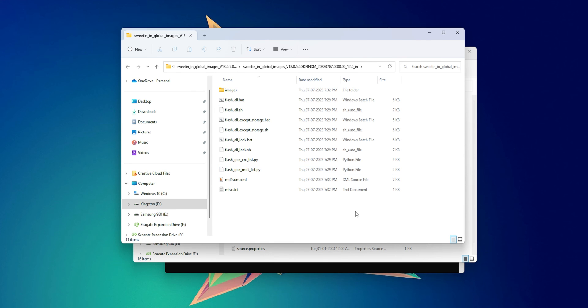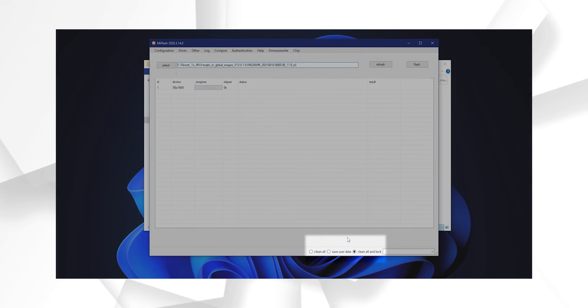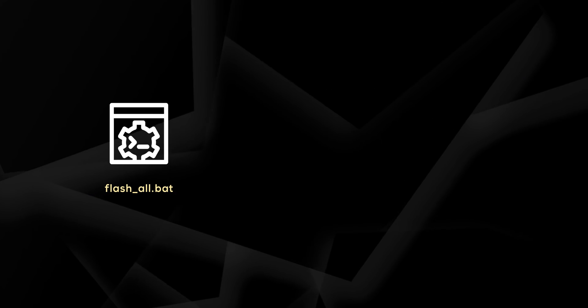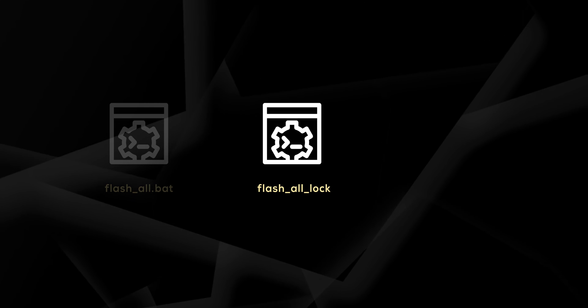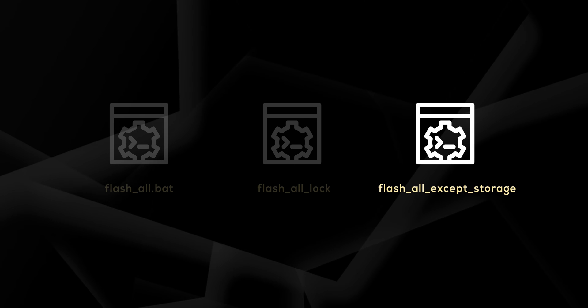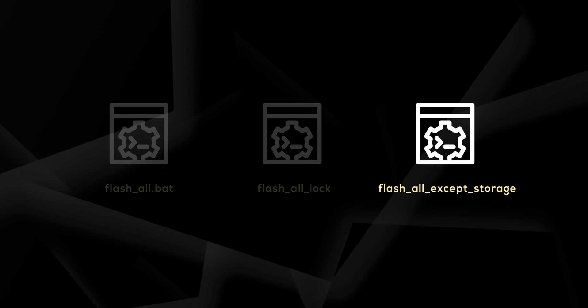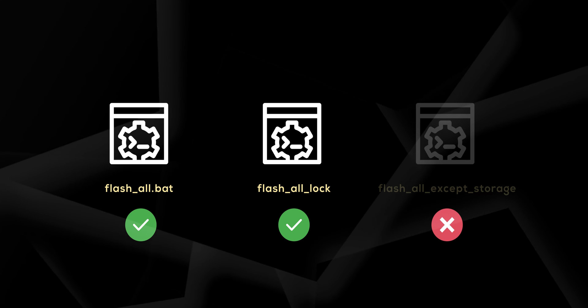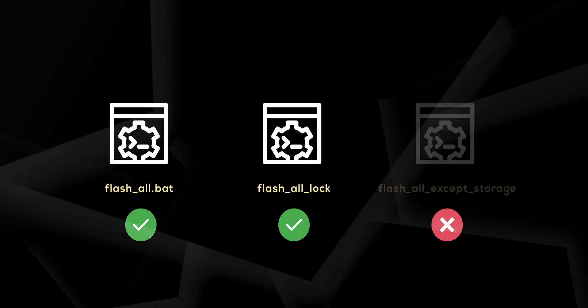Sort the contents by type and take a look at the batch files. These are exactly the options we had in the Mi Flash tool from the earlier video — the Mi Flash tool actually refers to these batch files when flashing MIUI. 'flash_all' flashes the MIUI ROM while keeping your bootloader unlocked. 'flash_all_lock' flashes and re-locks the bootloader. 'flash_all_except_storage' flashes MIUI while retaining internal storage data if you had a previous version of MIUI installed, but this option is not recommended — I'm a strong believer in clean flash, so you're on your own if you choose that option.